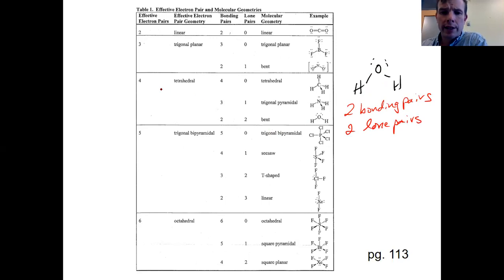And it has two lone pairs. So when I go into this chart and look at it, it has four effective pairs, two pairs of bonding electrons, two pairs of lone pair electrons. It forms a bent arrangement.